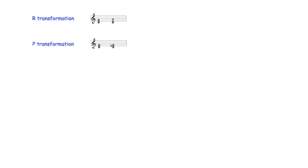The P transformation also retains two common notes and moves between major and minor triads. In this operation, the root and fifth of both triads are retained, while the third either ascends or descends by minor second. This transformation moves between parallel major and minor triads.